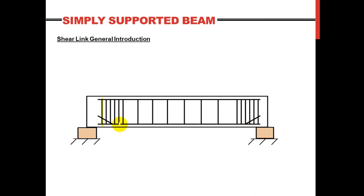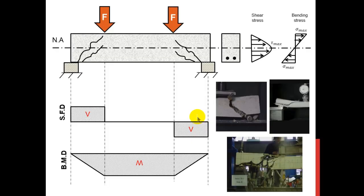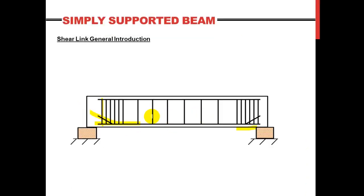Shear reinforcement can come in the form of vertical shear links. Alternatively, the main rebar at the bottom can be bent up at an angle of 45 degrees, or both methods can be combined using inclined shear links. Near the support the shear links are closely spaced, but approaching mid-span they are farther apart. This is because near the support we have maximum shear stress, while theoretically at mid-span there is no shear stress — so only minimum shear links are needed there.